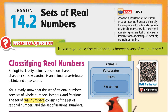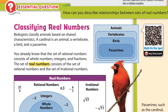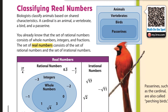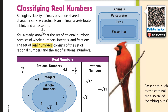You might be wondering, well, I thought a number was a number. But no, there are different types of numbers. Here we have a situation where biologists classify animals based on shared characteristics. A cardinal is an animal, a vertebrate, a bird, and a passerine.